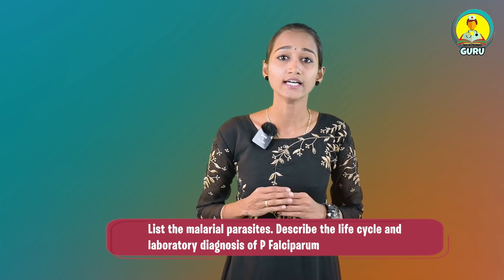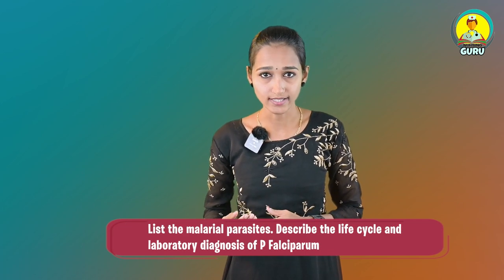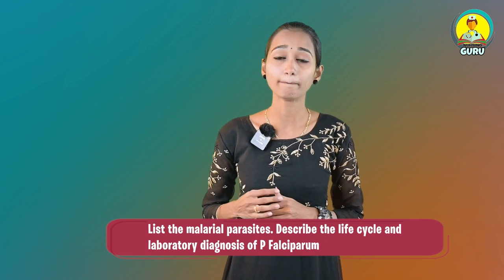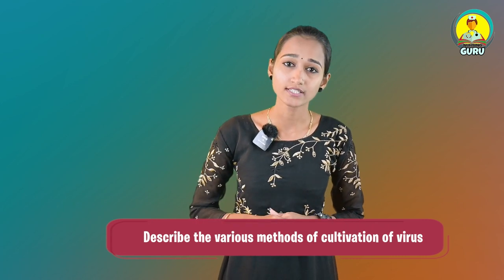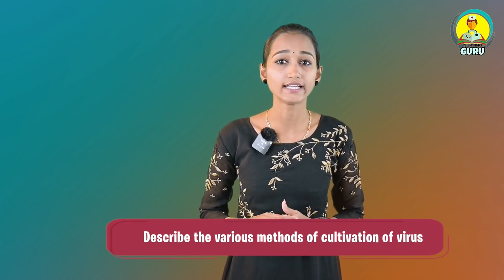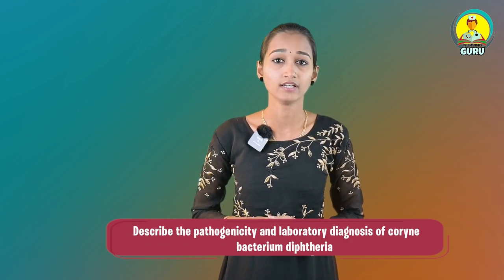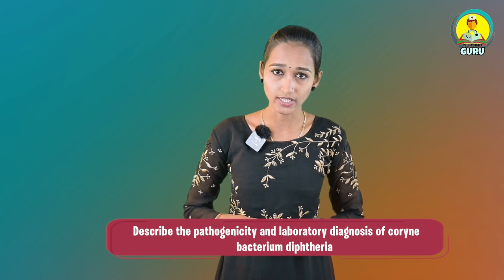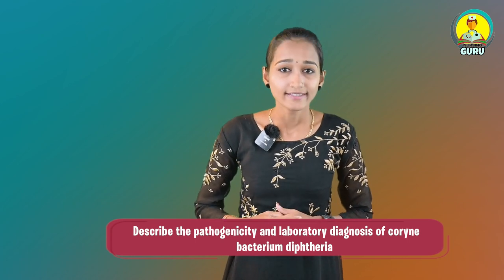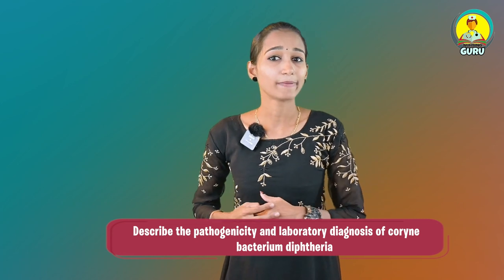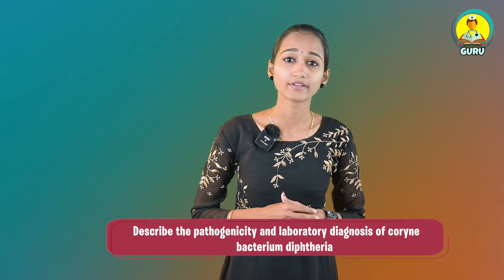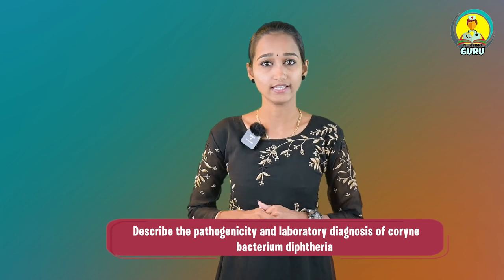Ninth question: list the malarial parasites. Describe the life cycle and laboratory diagnosis of Plasmodium falciparum. Tenth question: describe the various methods of cultivation of virus. Eleventh question: classify antigen-antibody reaction. Next question: describe the pathogenicity and laboratory diagnosis of Corynebacterium diphtheriae.